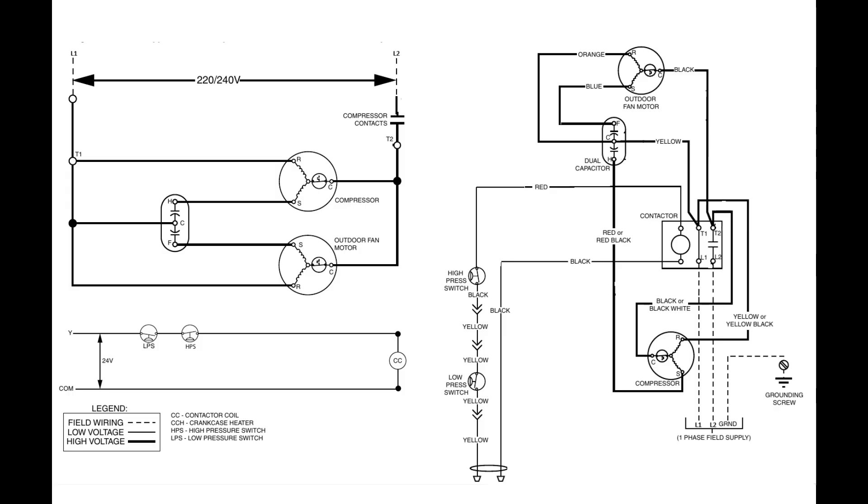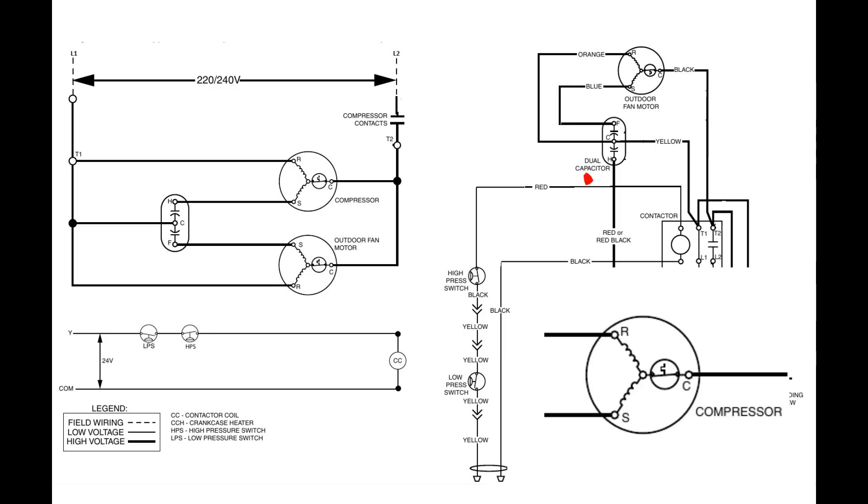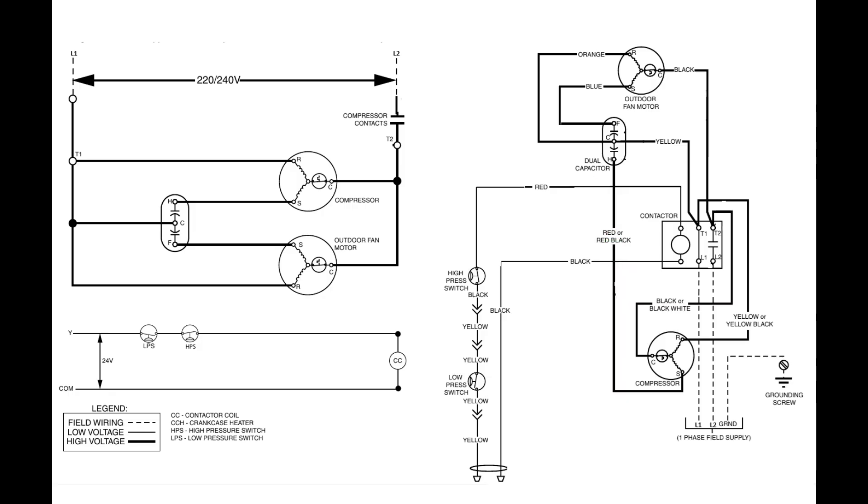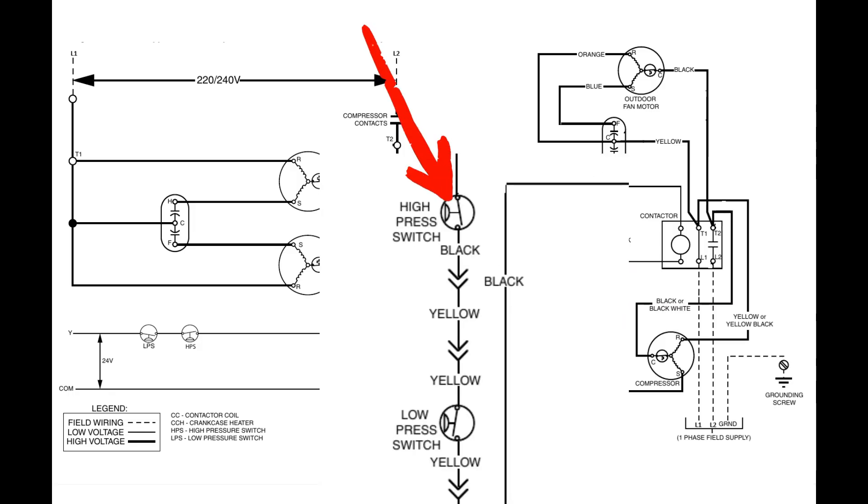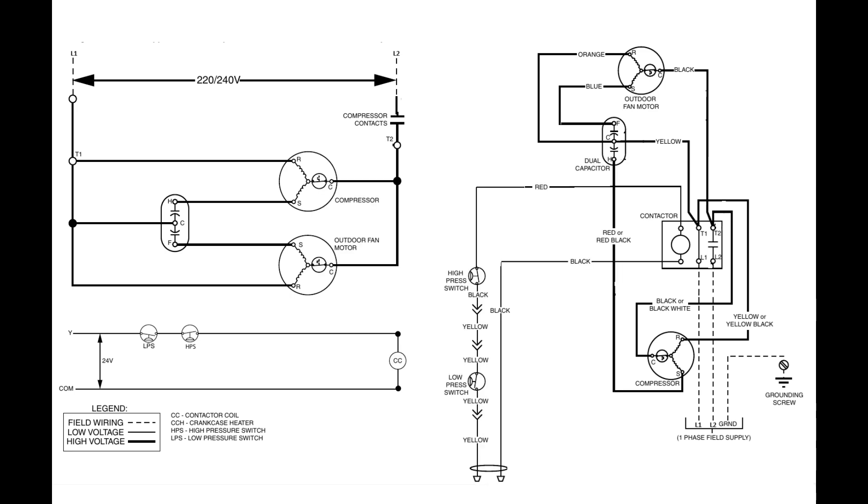So going back to our schematic, we can see all these things. We see a normally open switch on our contactor. We see a thermal overload switch in our compressor, which is normally closed. We see high and low pressure switches on our low voltage control circuit, which are also normally closed. We see male and female adapters connecting to one another. And we see intersections where wires are coming together where they are actually physically connecting and wires overlapping where they are not.